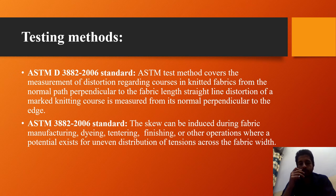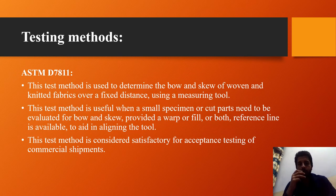That effect may cause skewing problems in such fabrics and draping problems in finished products. ASTM D7811 is used to determine the buoyant skewness of woven and knitted fabrics over a fixed distance using a measuring tool.